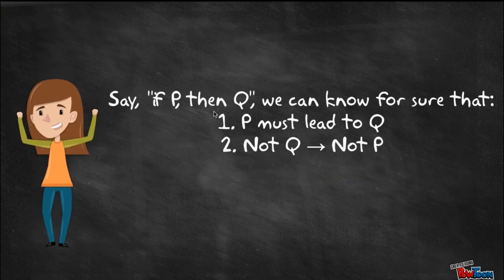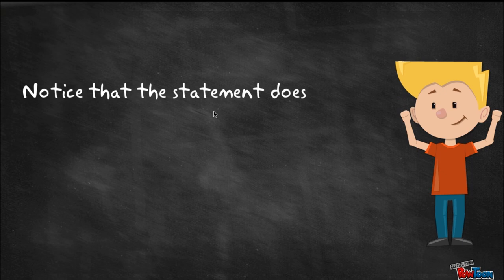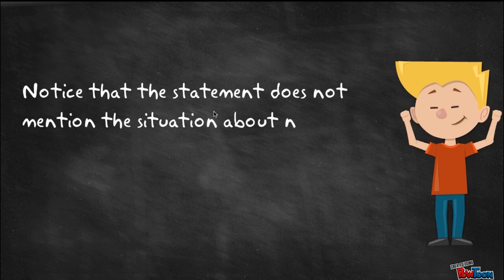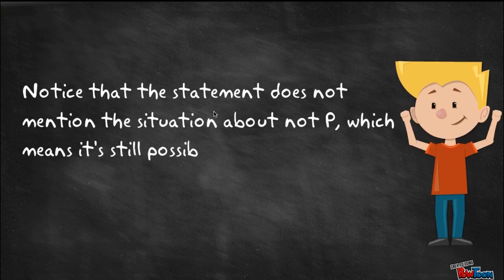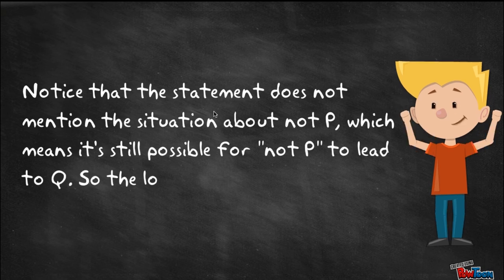Say, if p, then q. We can only know for sure that p must lead to q. Also, that not q means not p. Notice that the statement does not mention anything about what happens if not p occurs, which means it's still possible for not p to lead to q.